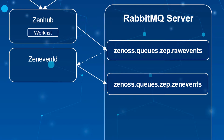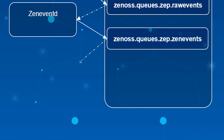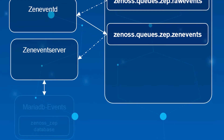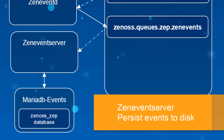After events are published to the ZenEvents queue, they are consumed by another daemon named ZenEventServer. Like ZenEventD before it, ZenEventServer has multiple duties in the event processing pipeline. First, ZenEventServer compares the Deduplication Identifier to existing events in the events database. If no match is found, ZenEventServer writes the event as a new entry in the xenos.zep database inside the MariaDB events database instance. If a matching Deduplication Identifier exists, ZenEventServer will update the last seen time field of the existing event and increment its count by one.